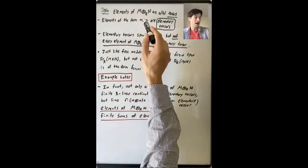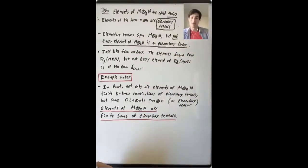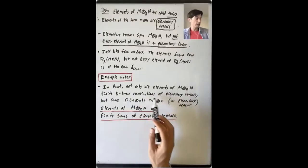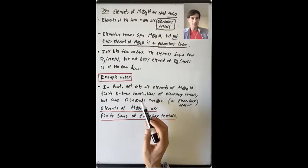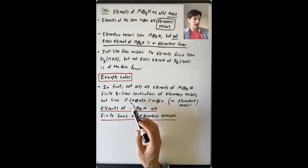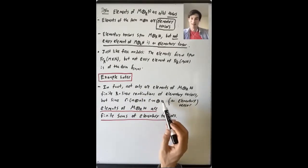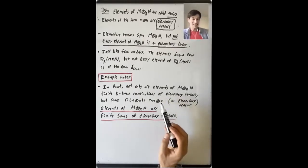I want to say one more thing about elementary tensors as a spanning set for this tensor product R-module. Not only are the elements in this tensor product finite R-linear combinations of elementary tensors — that is, the elementary tensors form a spanning set — but one of the main properties they satisfy is that R times (M tensor N) equals (R times M) tensor N. So R times M is an element of the R-module M, meaning R times M tensor N is an elementary tensor.